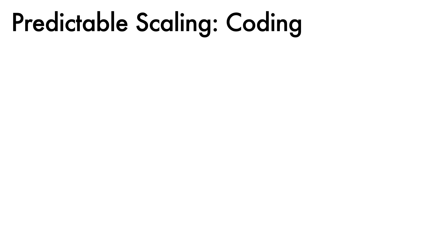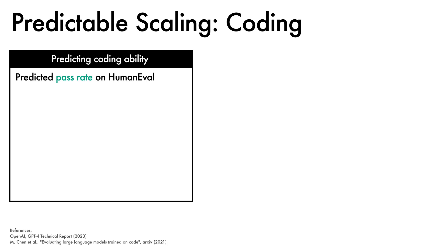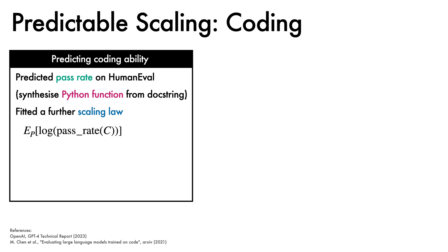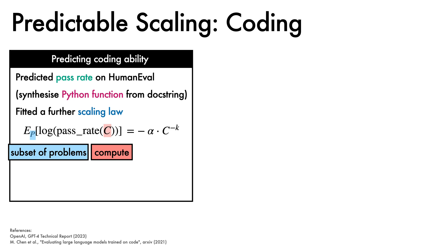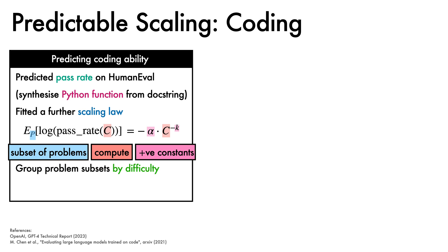Scaling was also studied for skills like coding ability, by predicting pass rate on HumanEval, where the task is to synthesize Python functions from docstrings. The authors fitted a simple model for the expected log pass rate on a subset of problems p as a function of compute c. The model took the form negative alpha times c raised to the negative k, where alpha and k are positive constants. Since problems with low pass rates are difficult to predict, the problems are grouped into subsets according to difficulty.